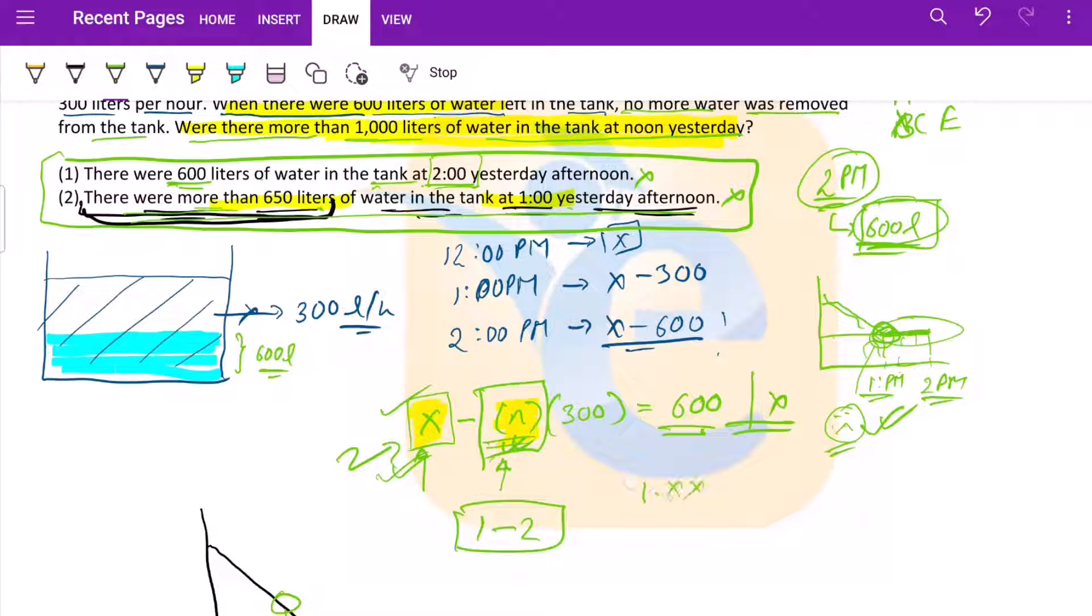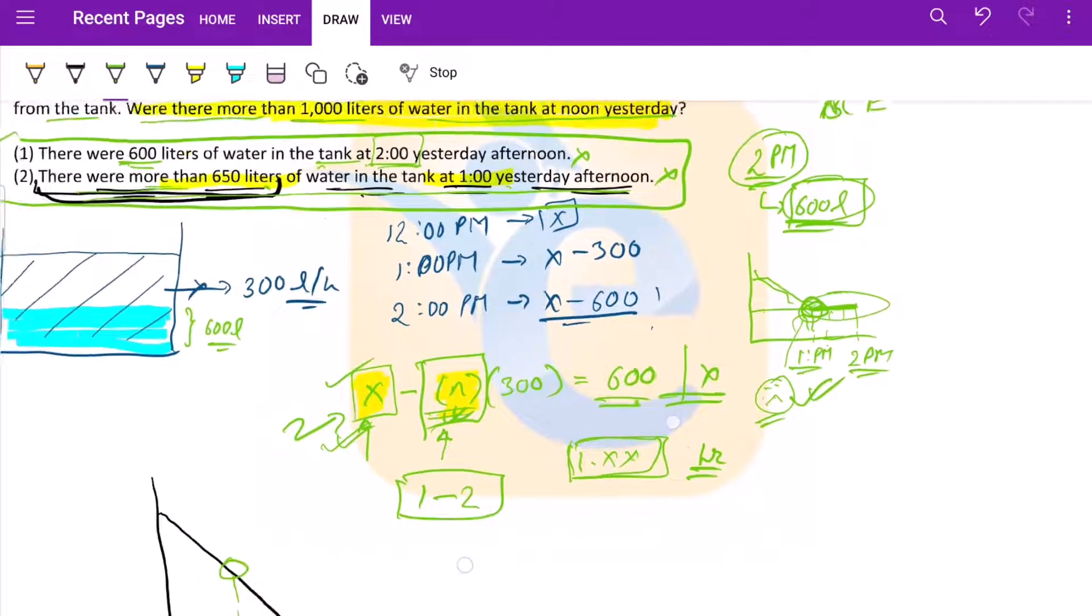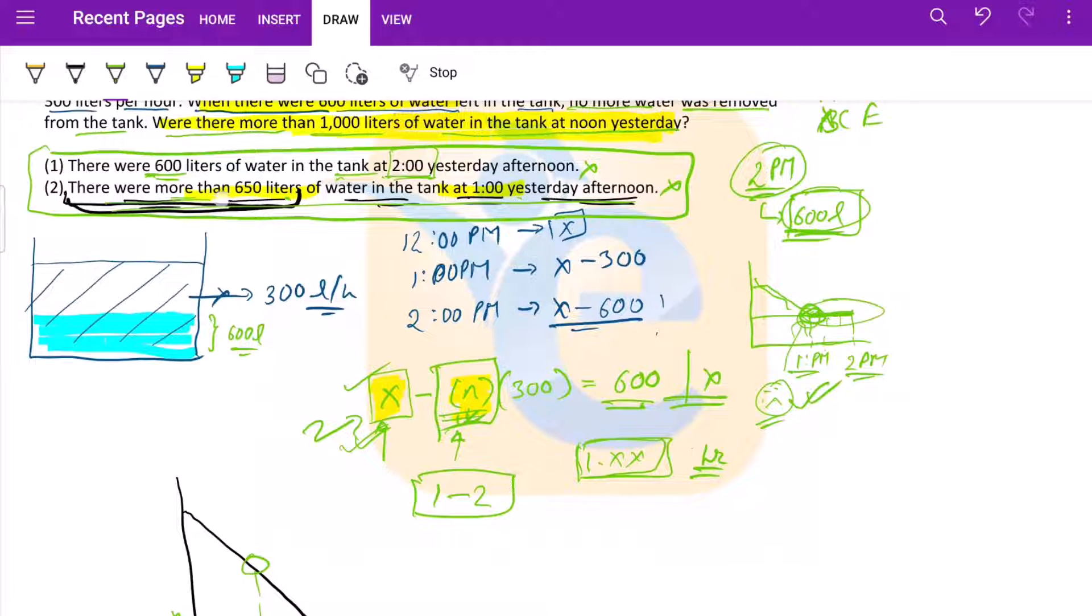If we combine both, at 1 PM, so this is our timeline, at 1 PM and then at 2 PM. At 1 PM it was 650, and at 2 PM 600 has already been reached. So somewhere between here, the water reached the level of 600 and it ceased flowing.